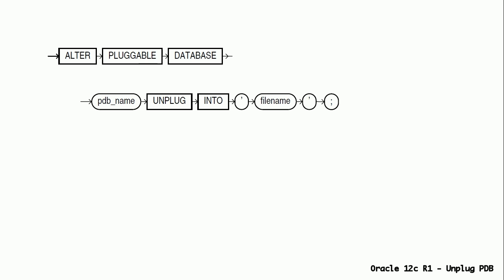This command will unplug the database from the current container, so PDB status will change to unplugged. DROP PLUGGABLE DATABASE is the only operation allowed on an unplugged PDB.